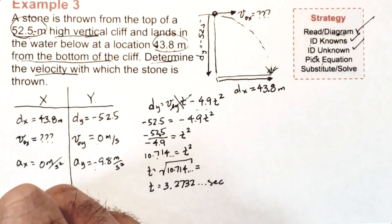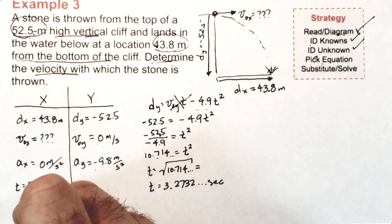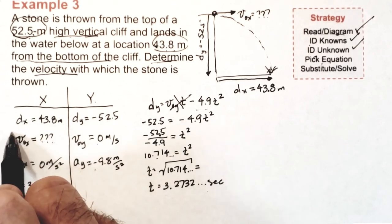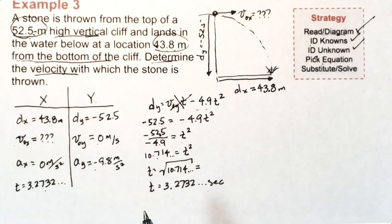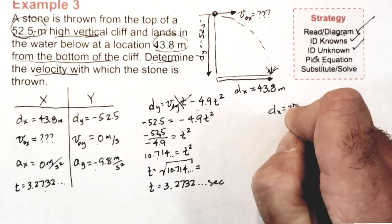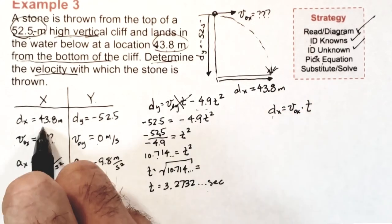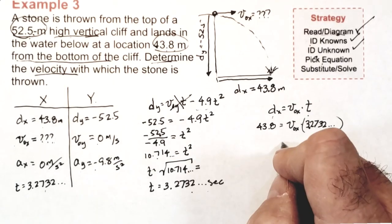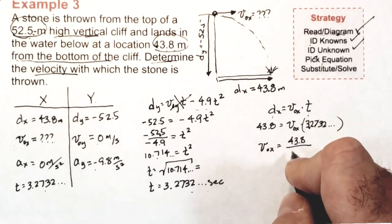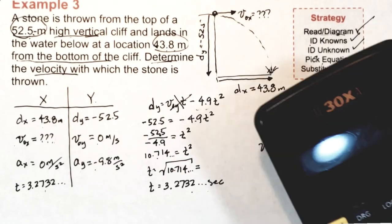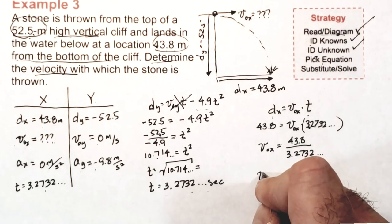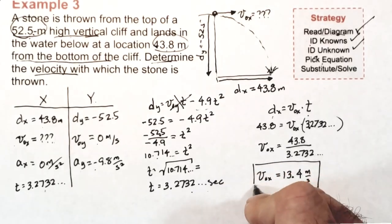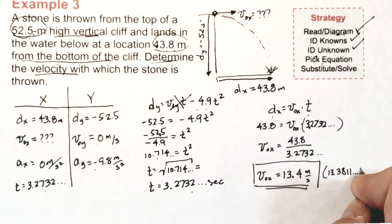This value of time is used with both X and Y information to do calculations, so I can use it with my X information in order to solve for my unknown, VOX. But first I must pick an equation. When I look, there's only one equation I ever use, so I write it down. Then I take values for DX and T and substitute it in. I have to do algebra to solve for VOX, so I divide each side of the equation by 3.2732. When I do, I can find out what VOX is using my calculator. It's 13.4 meters per second, or 13.3811 meters per second.